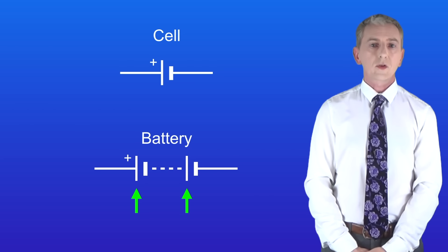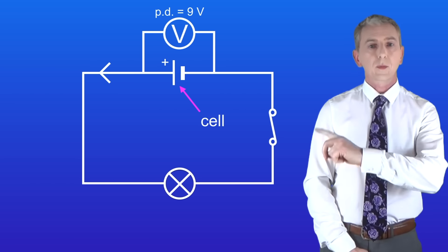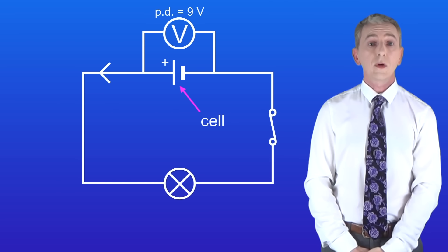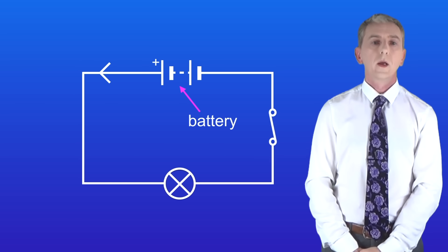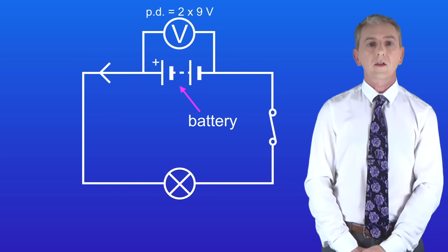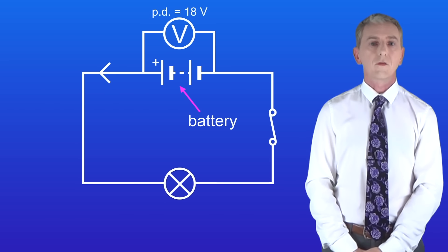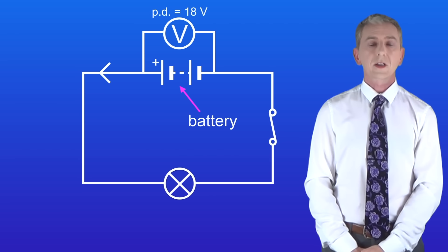In this video we're looking at how to calculate the potential difference produced by batteries. Here's a single cell with a potential difference of nine volts. If we connect two of these cells in series to form a battery, and measure the potential difference using a voltmeter, we can see that it's two times nine volts — 18 volts. So the potential differences of cells add up to give the total potential difference of the battery.